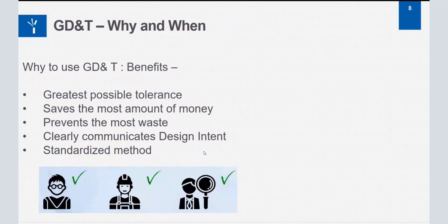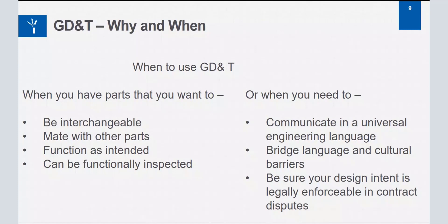When to use GD&T: first, when you want parts to be interchangeable. For example, when a car's rear-view mirror is damaged in an accident and we go to a workshop to replace it, the replacement happens quickly and easily because the other rear-view mirror has been designed and manufactured in such a way that it is interchangeable — it fits exactly where needed. That is the first case for applying GD&T.